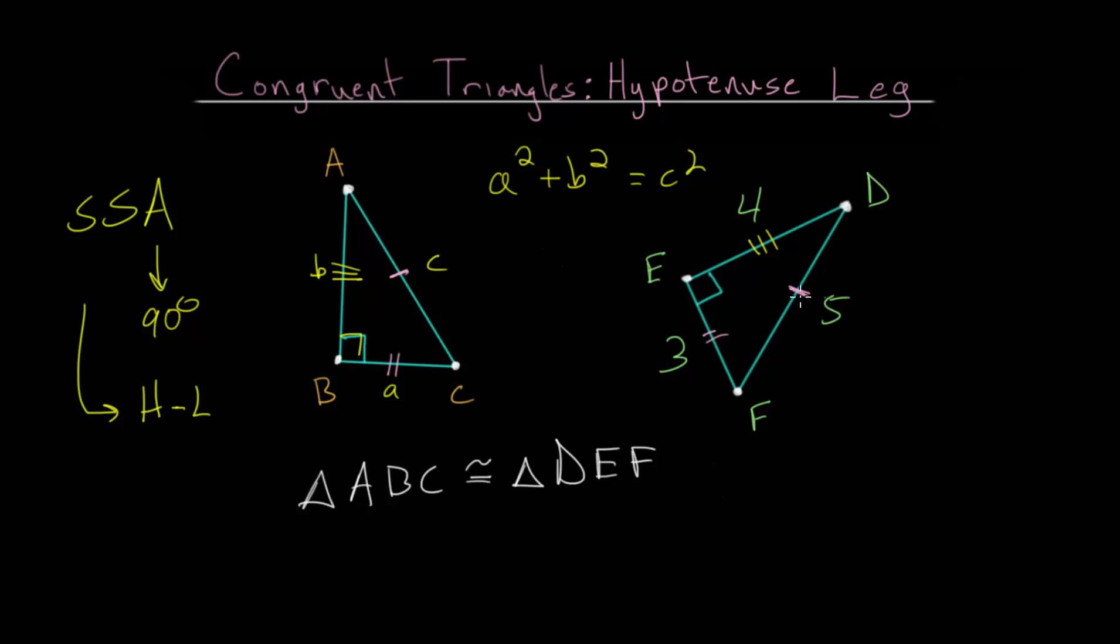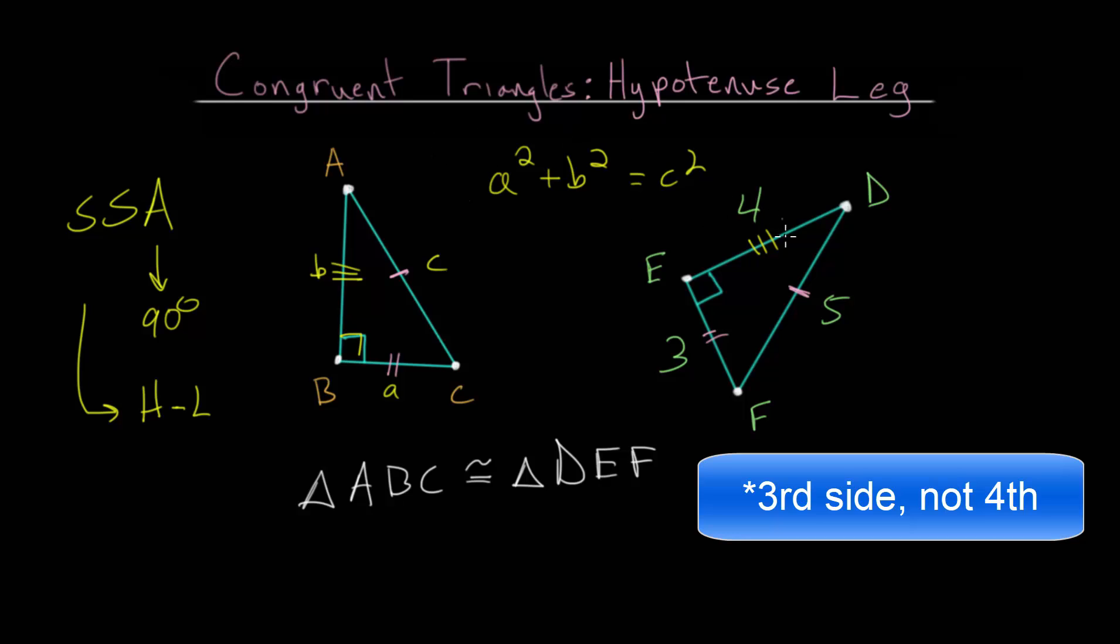So if we know two of the sides in a right triangle, we can always determine the fourth one using this Pythagorean theorem.